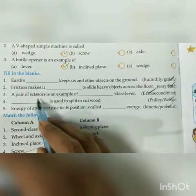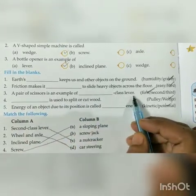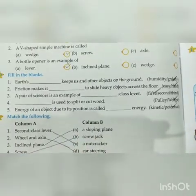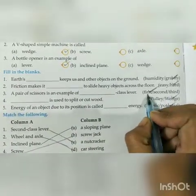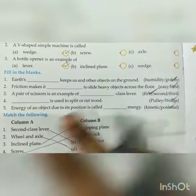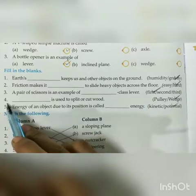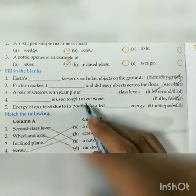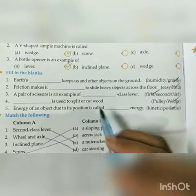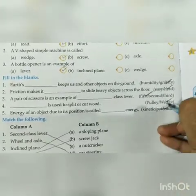Next: a pair of scissors is an example of a first class lever, in which the fulcrum is between the effort and load. Next blank: a wedge is used to split or cut wood. The answer is wedge.